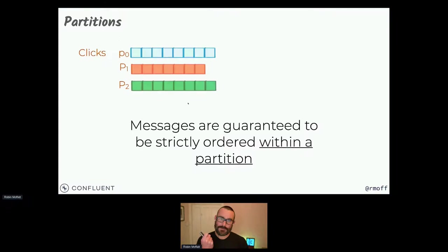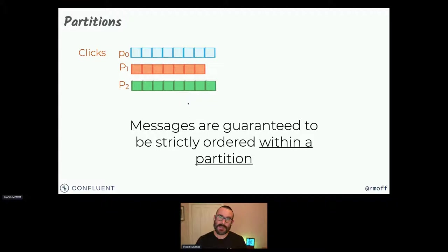Within a topic, we're going to carve it up one more time into partitions. A partition is the unit of scale within Apache Kafka. You don't have to have more than one partition within a topic, but generally you will because it gives you the ability to scale your processing. Within a partition, you have a strict ordering guarantee on the data — you're guaranteed that data going into partition zero will be read from that topic in exactly the same order in which it was written. The same holds for partition one and partition two.